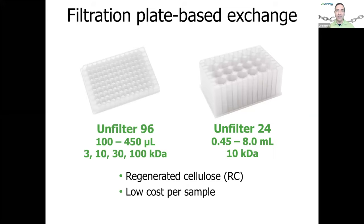One key change we've made is a plate-based exchange. We've designed these unfilters — a 96-well or 24-well format. The 96-well format handles 100 to 450 microliters per well; the 24-well handles 450 microliters to 8 mils per well. They come in different molecular weight cutoffs — 3 to 100 kD for the 96-well, and 10 kD to 100 kD for the 24-well. Both have RC membranes fused in the bottom. We manufacture these plates ourselves and do 100% pressure testing on every single well before they go out the door.